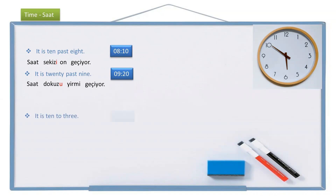If the sentence is it is 10 to 3, this time it is not passing. In Turkish, we say 'there are 10 minutes to 3.' There is / there are in Turkish is var. So: saat, üçe — 3 takes the dative suffix -e, 10 — on, var. It is 10 to 3: saat üçe on var.